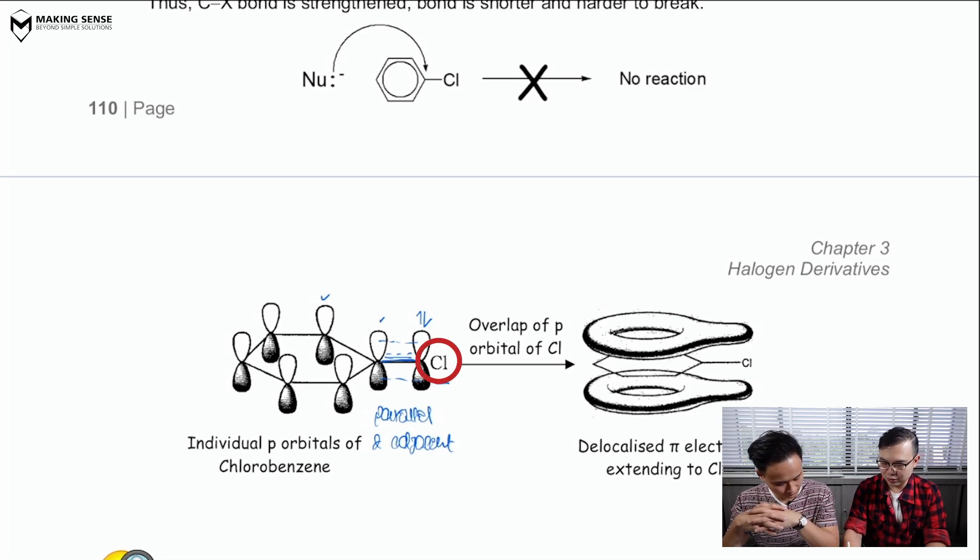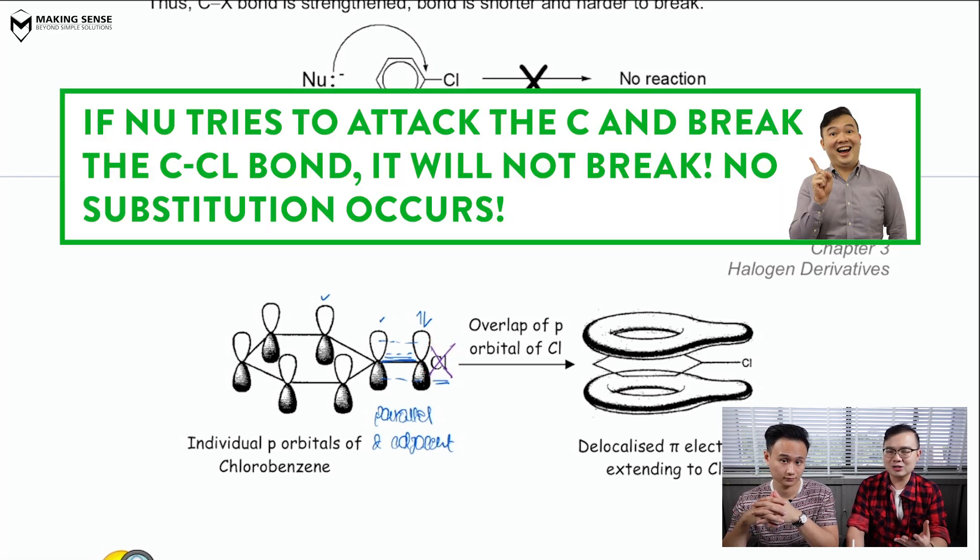Now, because this bond is strengthened, the breakage of this bond will prove to be a bit more difficult. And as a result, if you want to try to substitute this chlorine away, it is not going to be so easy. And this is the second reason why, at the end of the day, halogenyl arenes do not undergo a nucleophilic substitution.